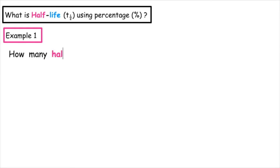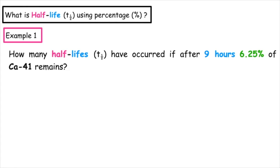Example one: how many half-lives have occurred if after nine hours, 6.25% of calcium-41 remains? So the unit we're working in this time is percentage.